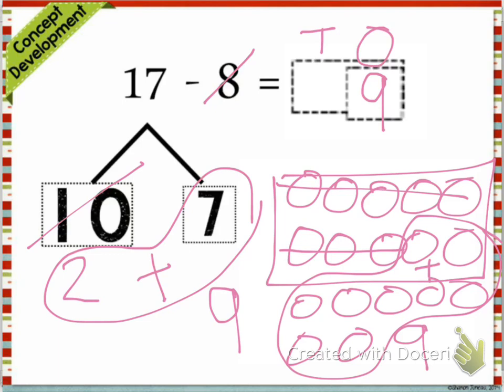Just like that. So we know that our answer, 17 minus 8 equals 9. 9 has 9 ones and 0 tens. All righty guys, that's it for this video. See you.